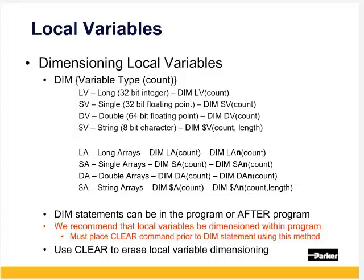There are also singles, which are 32-bit floating point numbers, and doubles, which are 64-bit floating points. Strings can include 8-bit characters. DIM $V(5,20) would dimension five string variables of 20 characters long.